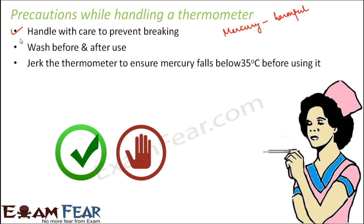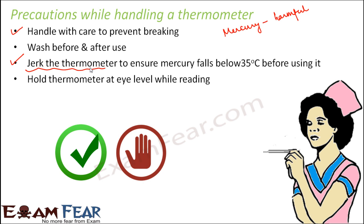Before using the thermometer, jerk it to ensure the mercury falls below 35 degrees Celsius. Because of the kink in clinical thermometers, the mercury level does not fall back on its own. For example, if you measured someone's temperature at 39 degrees Celsius today, tomorrow the mercury may still be at that level. So you must physically jerk the thermometer to bring the mercury below 35 degrees Celsius, and confirm by reading it before use.